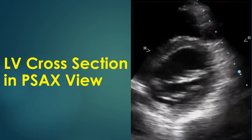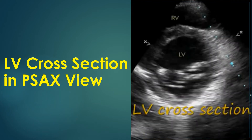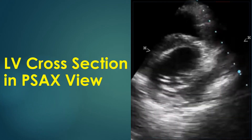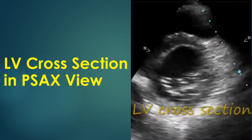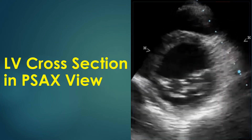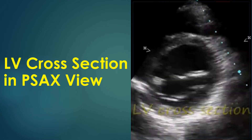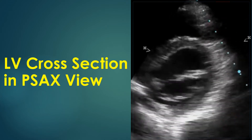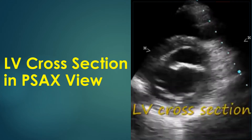Short axis imaging at the ventricular level can be obtained by directing the beam downwards from the previous position. It is used to assess the cross section of the mitral valve in mitral stenosis to quantify the mitral valve area. Left ventricular wall motion abnormalities can be visualized well in this view. A portion of the right ventricle is also visible beyond the interventricular septum. The left ventricle has a circular shape in this view and the right ventricle is semilunar with the septum convex to the right ventricle.